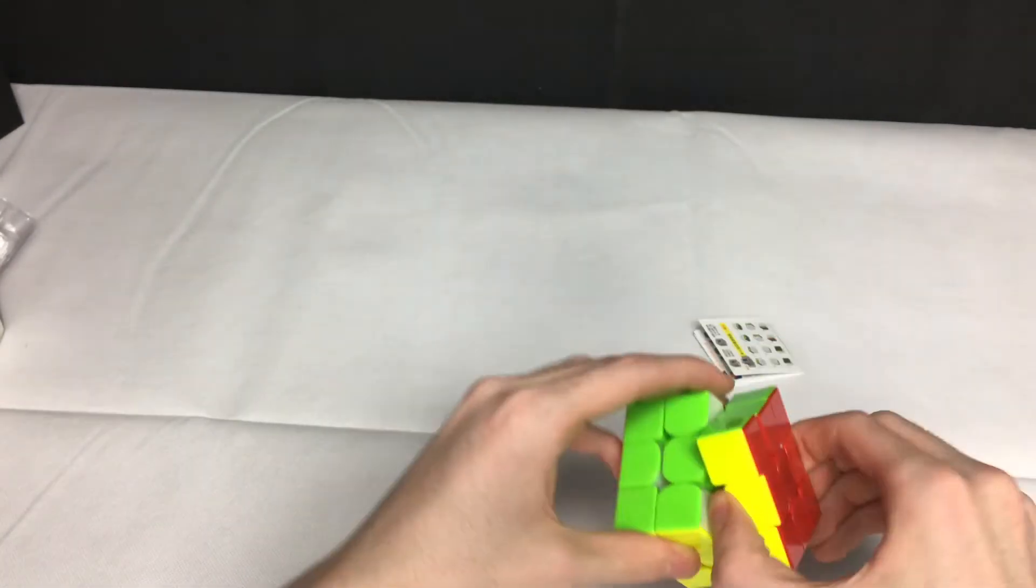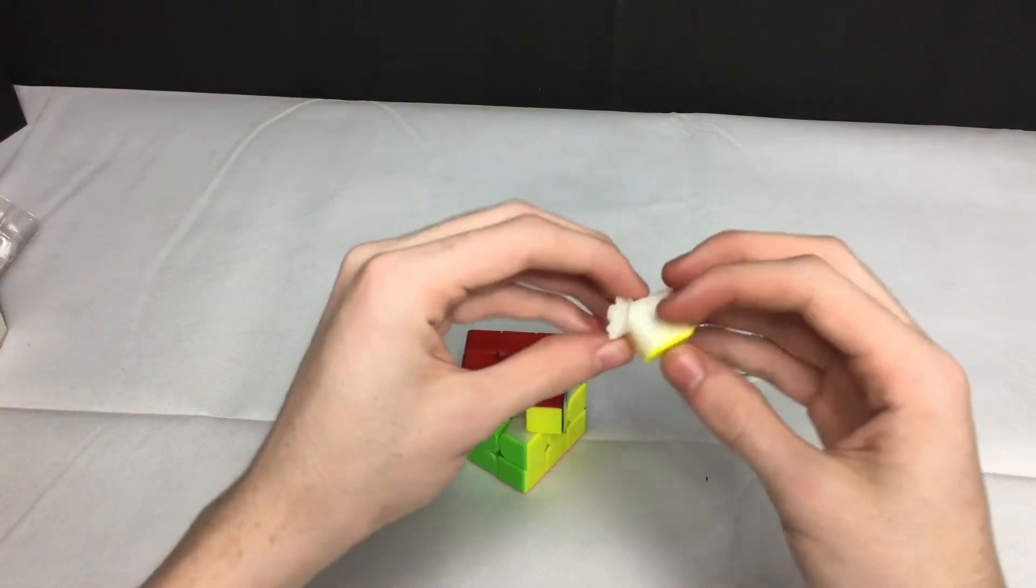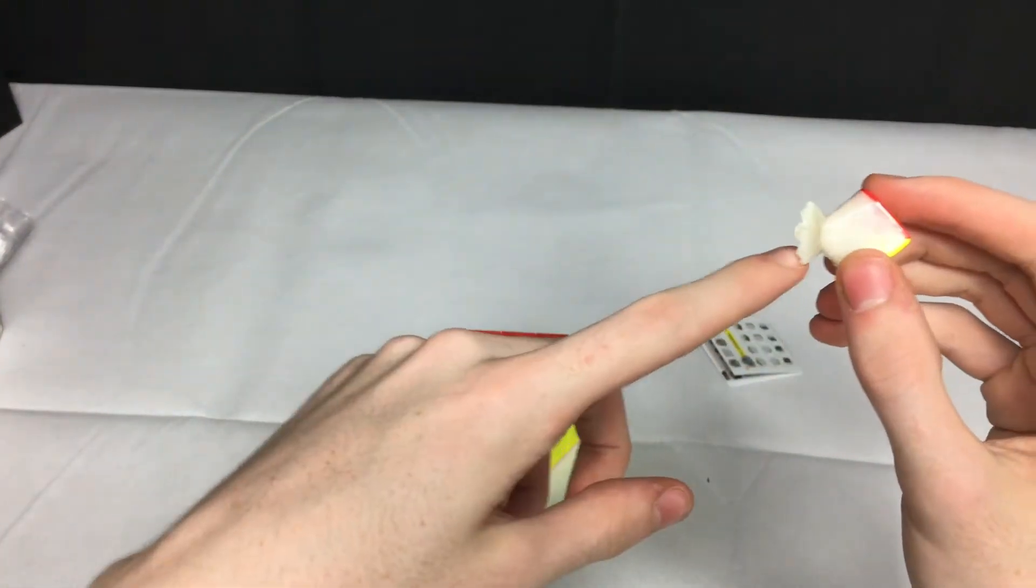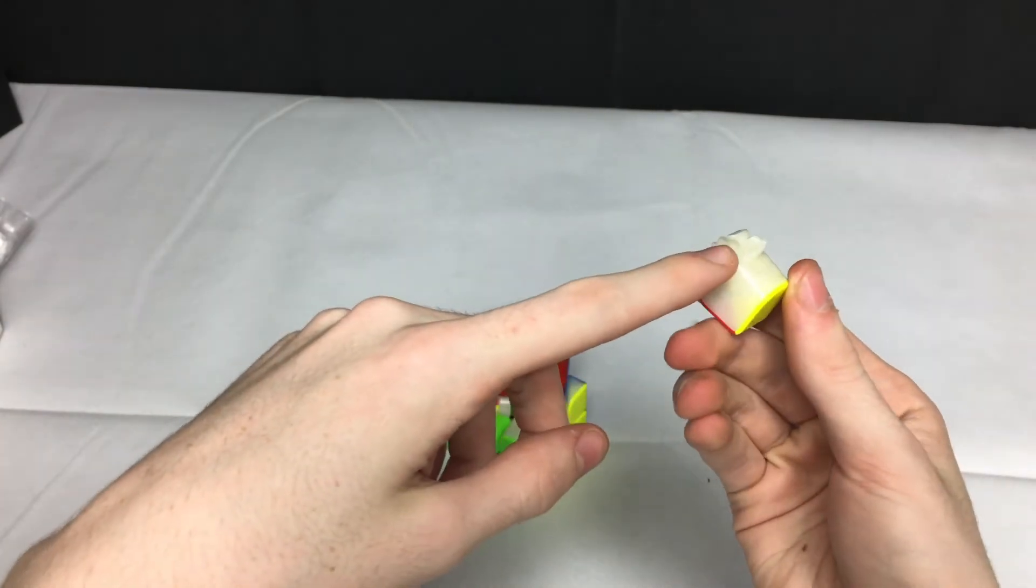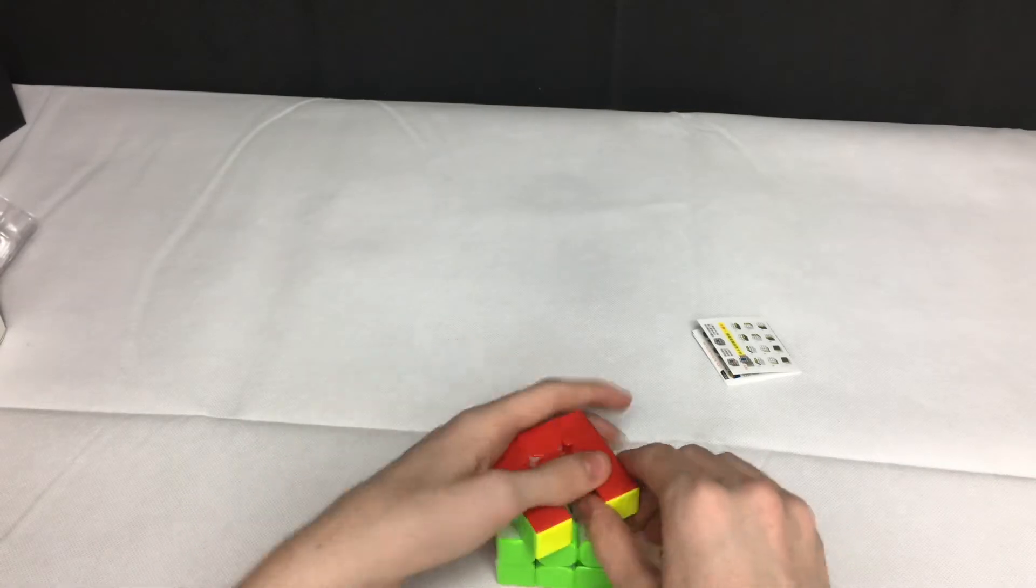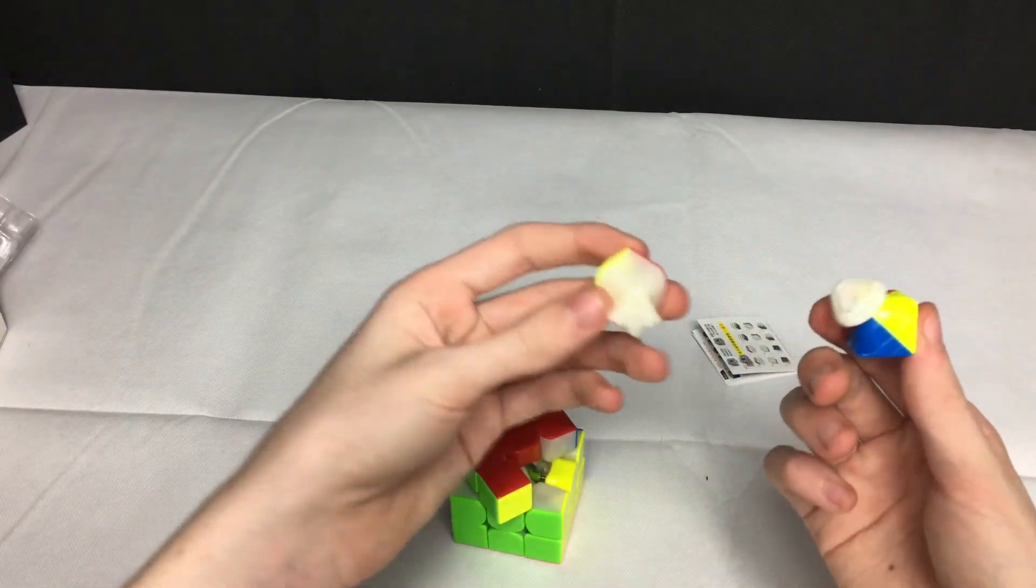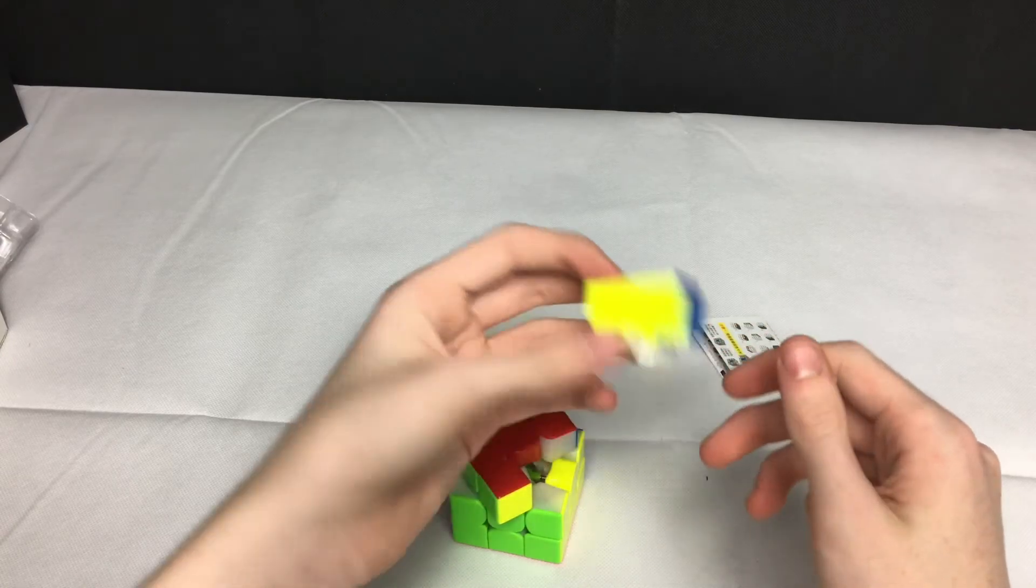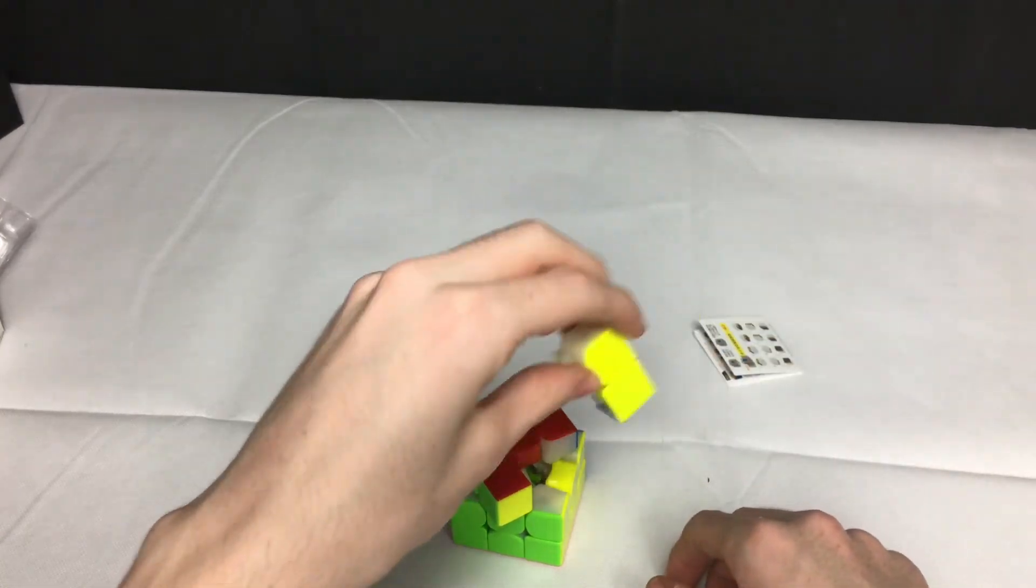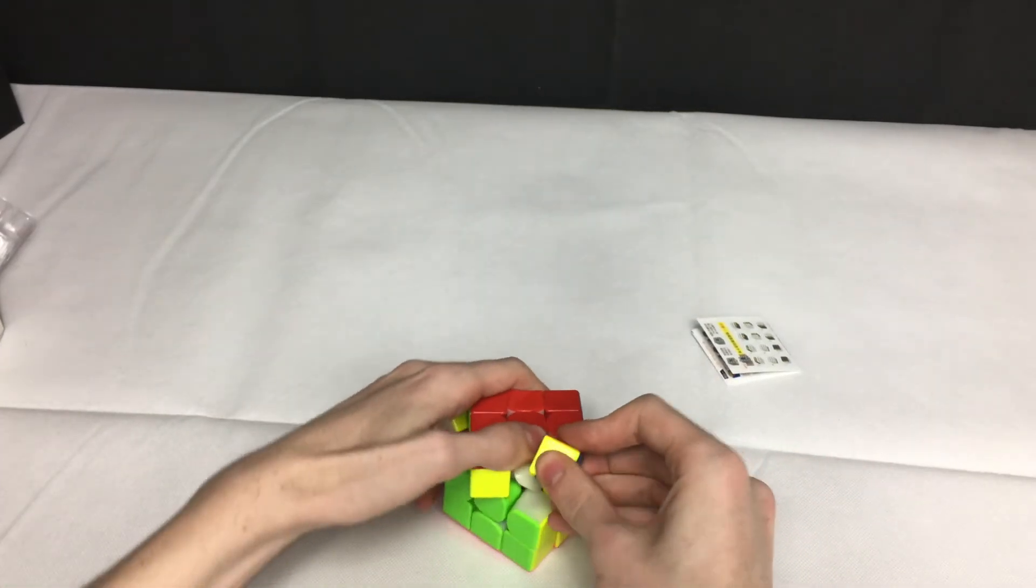All right, now let's take a look at the mechanism here. There we go. Okay, very very similar to the Mr. M actually. There's not very much different and it's pretty standard, actually. See if I can look at the corner piece here. Yeah, these are both pretty standard. You can definitely tell that the magnets are pretty strong. So let's go ahead and put these back in there.